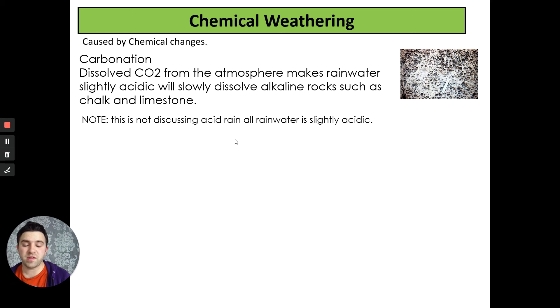Chemical weathering is caused by chemical changes in the atmosphere. Carbonation, where dissolved CO2 from the atmosphere makes rainwater, much like our corrosion in our erosive processes. This will slowly dissolve alkaline rocks such as chalk and limestone. This is not acid rain. All rainwater is slightly acidic. Acid rain is where rainwater becomes more acidic, but we're not going to talk about that here. This is carbonation, where all rainwater is mildly acidic, much like our seawater, which causes the alkaline rocks to dissolve.